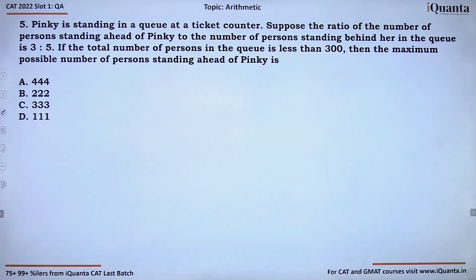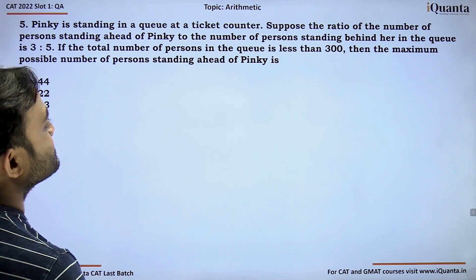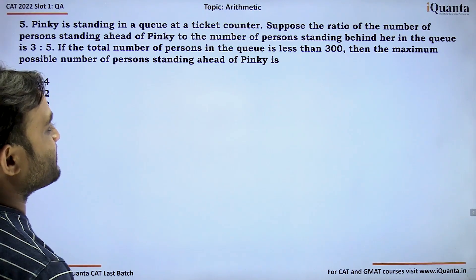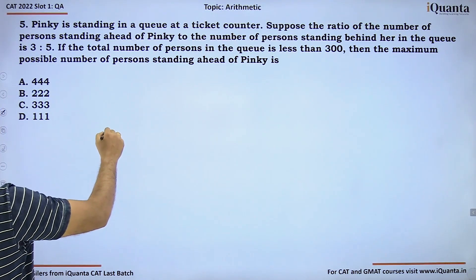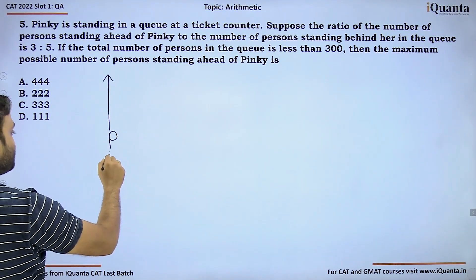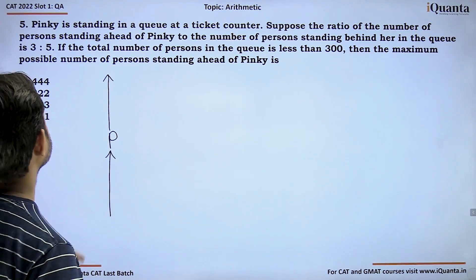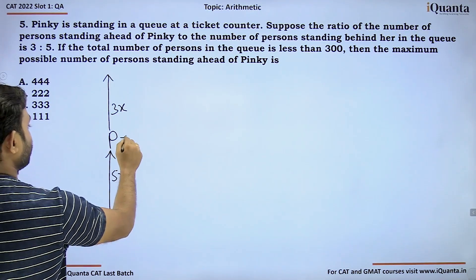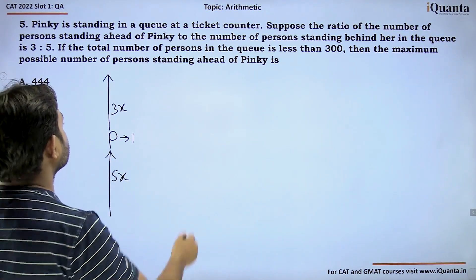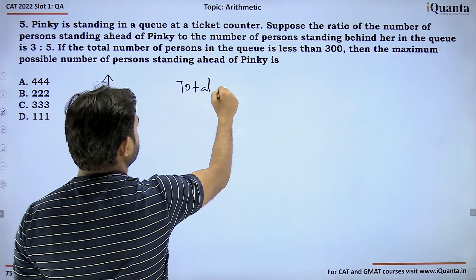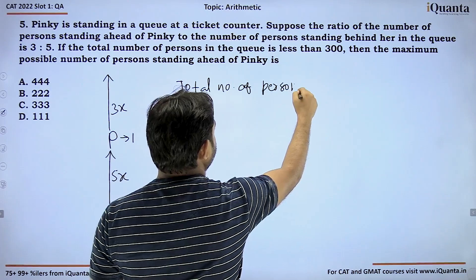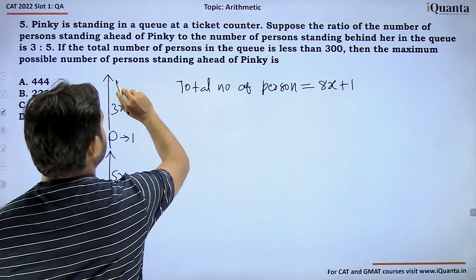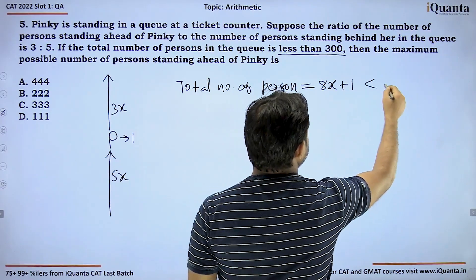Last question says Pinky is standing in a queue at a ticket counter. The ratio of number of persons standing ahead of Pinky to the number of persons standing behind her in the queue is 3 to 5. So if persons ahead are 3x, behind are 5x, and Pinky is one person. Total number of persons will be 8x plus 1. If the total is less than 300, what values can we take?